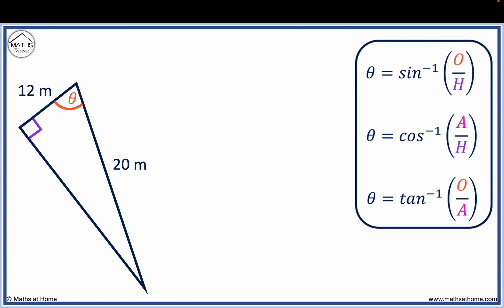Here 12 meters is between theta and the right angle, so it is the adjacent. 20 meters is opposite to the right angle, so it is the hypotenuse.